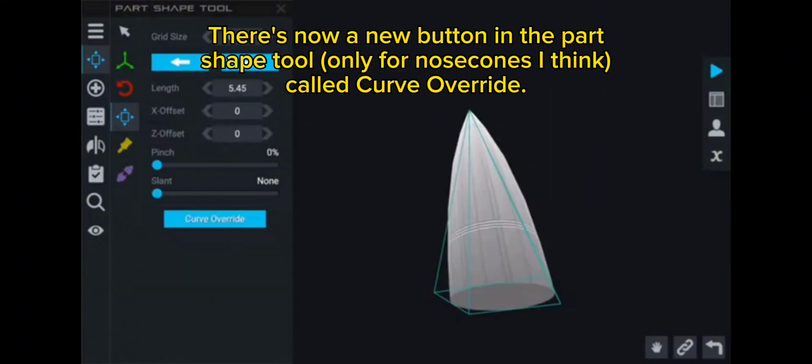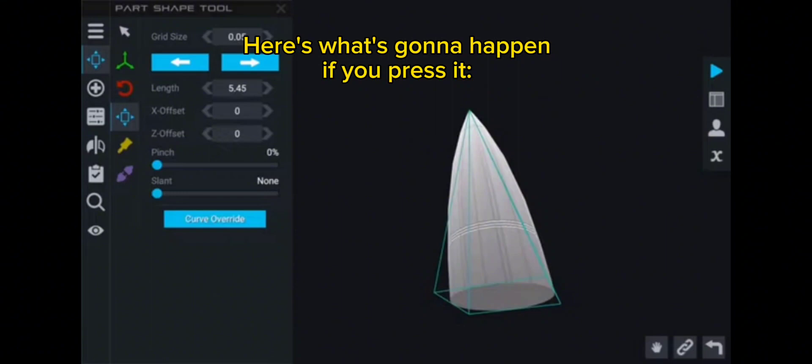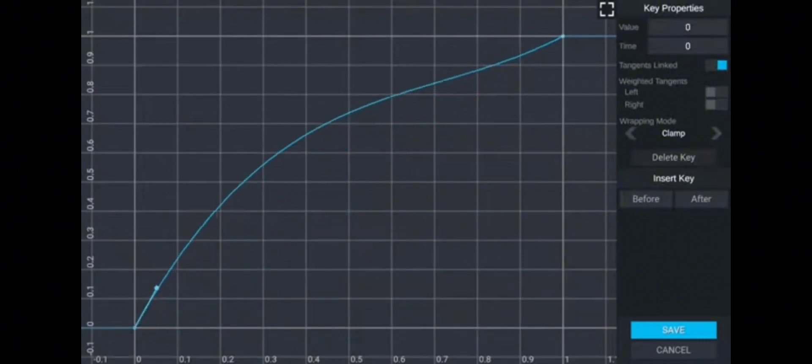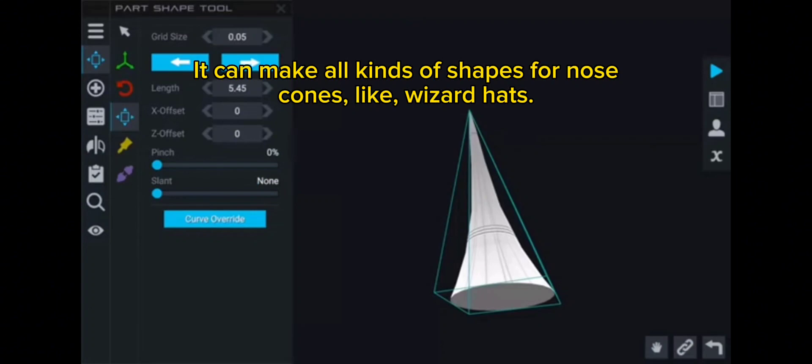There's now a new button in the part shape tool only for nose cones I think, called curve override. Here's what's gonna happen. If you press it, to me, that looks like the curve editor that can also be seen when you're editing the crater slope of a planet. It can make all kinds of shapes for nose cones, like wizard hats.